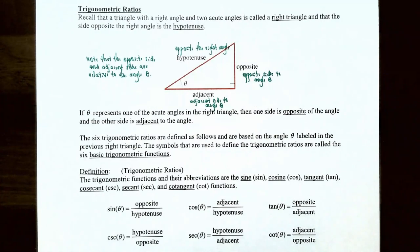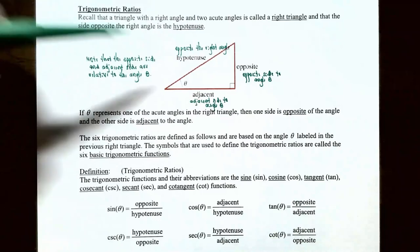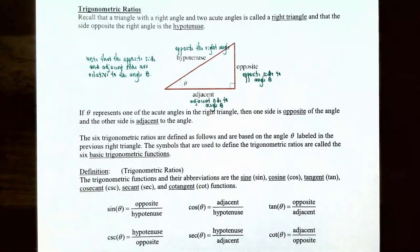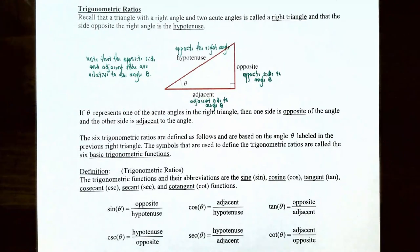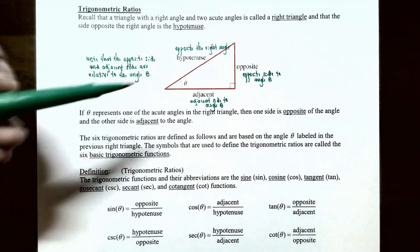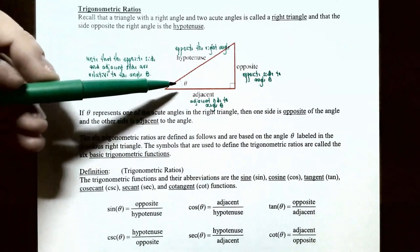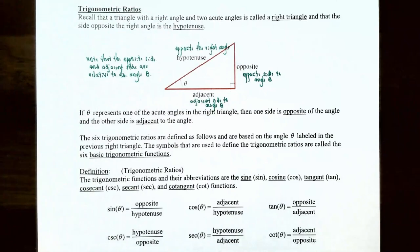Let's start by talking about trigonometric ratios. Recall that a triangle with a right angle and two acute angles — angles with less than 90 degrees — is called a right triangle, and the side opposite the right angle is called the hypotenuse. If theta represents one of the acute angles, then the side opposite theta is called the opposite side, and the side adjacent to it is called the adjacent side.